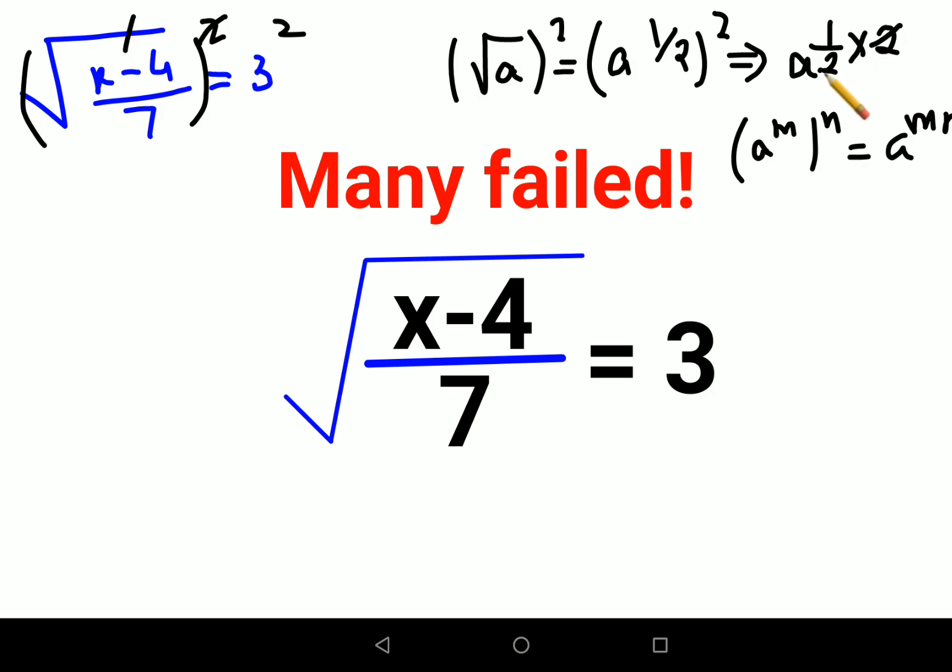Using the same logic in your LHS, you're left with (x-4)/7 = 9, since 3 squared is 9. Now to find the value of x, multiply both sides by 7, so you're left with x-4 = 63.